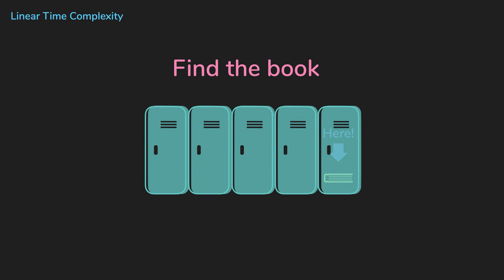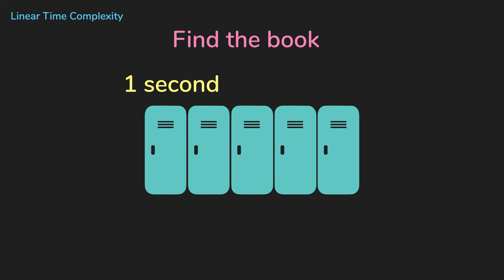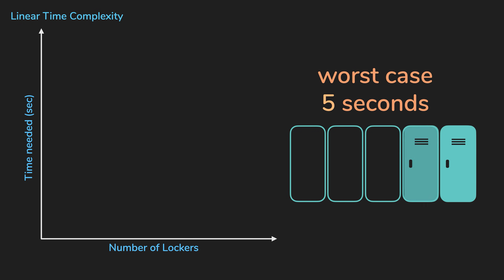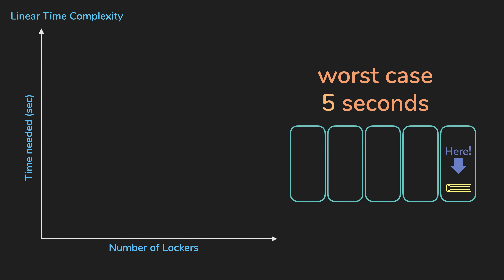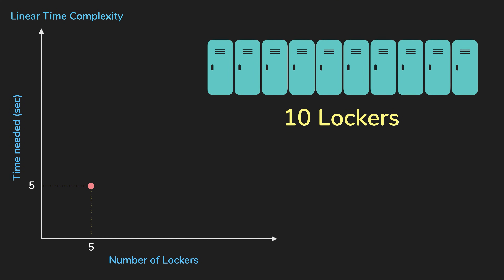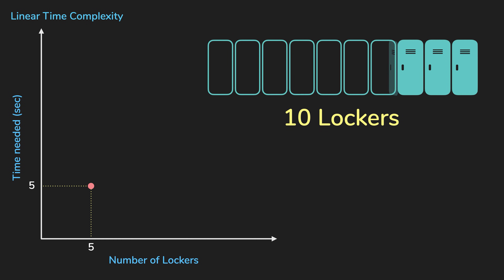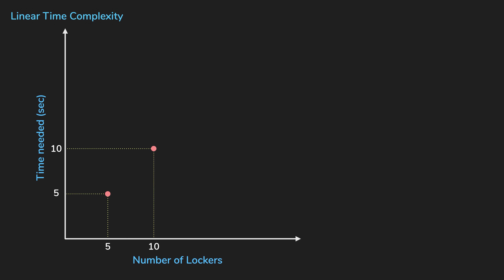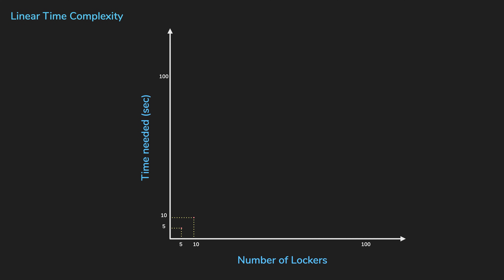If it takes one second to open a locker and there are five lockers, in the worst case it's going to take you five seconds, where the worst case would be when the book is in the last locker. If there are 10 lockers, it'll take 10 seconds; 100 lockers, 100 seconds, and so on. You can see that the time needed to find the book increases linearly as the number of lockers gets larger.